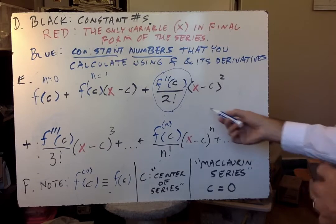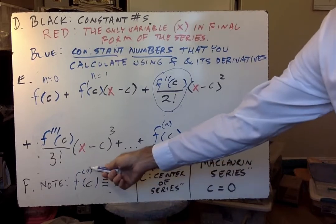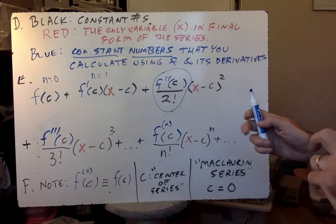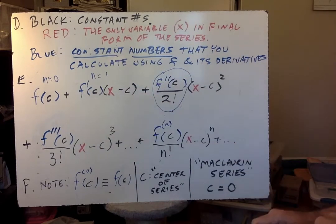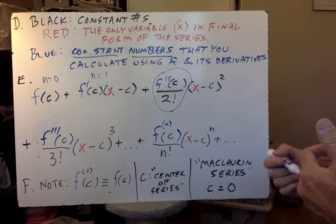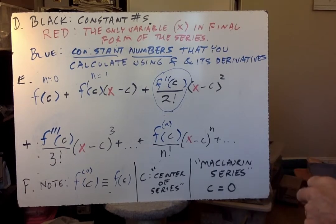Now if we're going to use that notation, we have to agree on certain things. We have to agree that f to the zero, the zeroth derivative, just means the function itself. And then that term becomes accurate. C is called the center of the series. That's the name. So we'll say that a series is centered about x equals c.